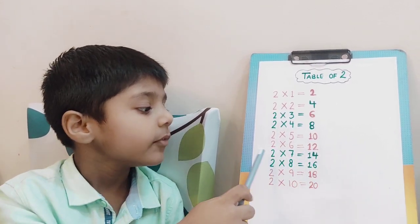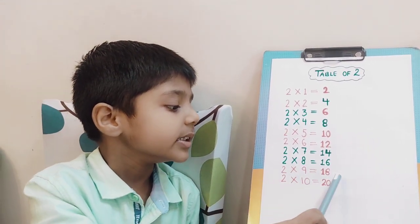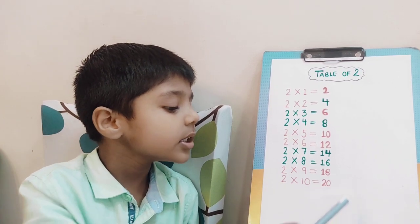2 sixes are 12, 2 sevens are 14, 2 eights are 16, 2 nines are 18, 2 tens are 20.